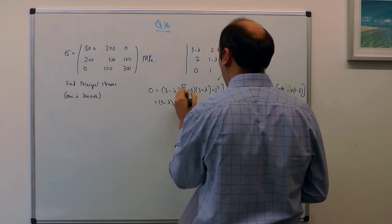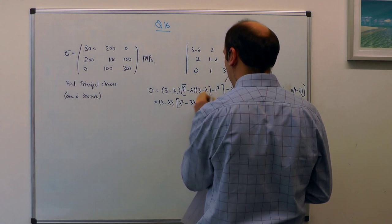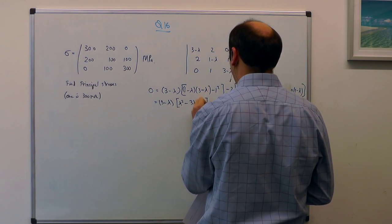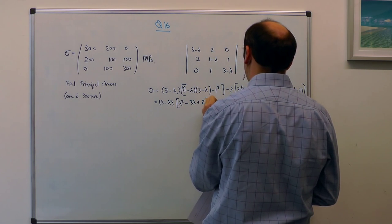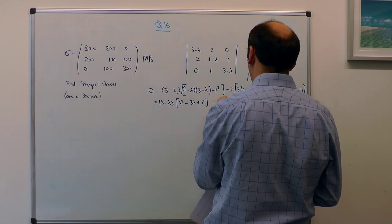So now I have got lambda squared minus 3 lambda plus 3 minus 1, so that is plus 2, minus 4 times 3 minus lambda.